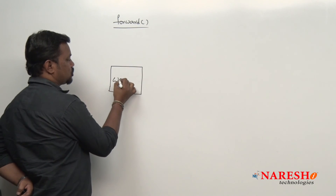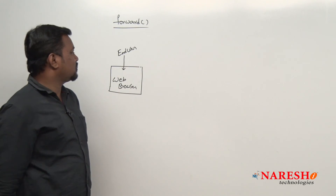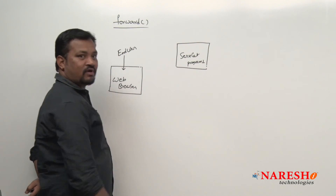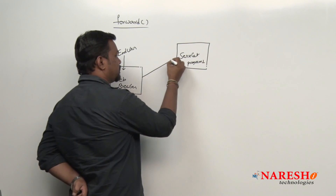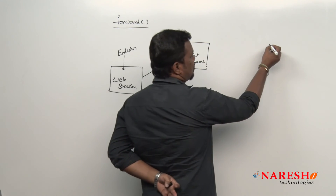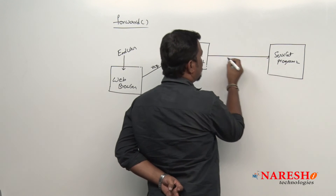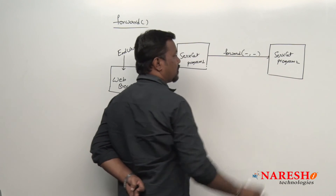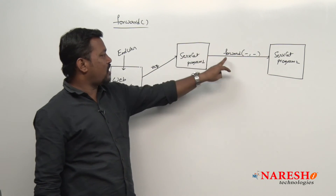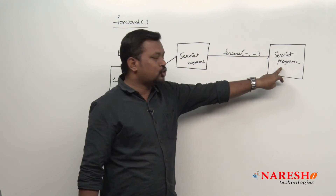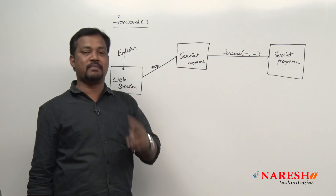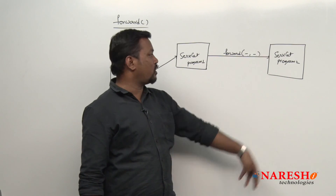Imagine this is the web browser, where the end user is trying to communicate with our application. I have one servlet program here — servlet program one. The request has been taken here. Forward means I have one more servlet program here. From servlet program one, I am forwarding to servlet program two. This servlet program will take the request and forward it to the next resource. The next resource can be another servlet program, a JSP program, or an HTML file — anything, one more resource.